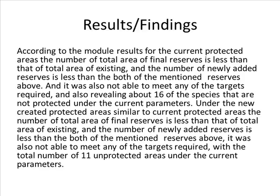According to the findings of the project, none of the current protected areas were able to meet any of the targets required, revealing about 16 species that are not protected under the current parameters. With newly added protected areas, similar results were found — the targets were still not met, with a number of species remaining unprotected under the current parameters.